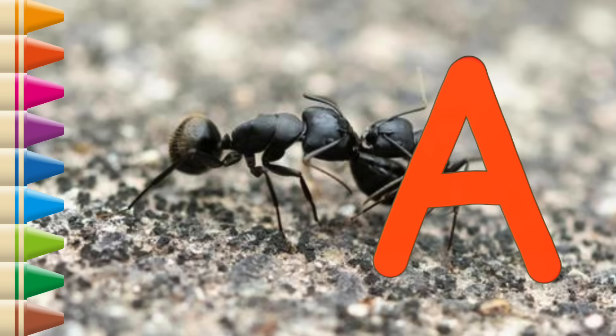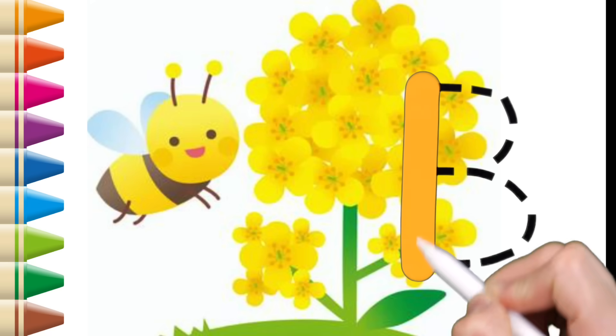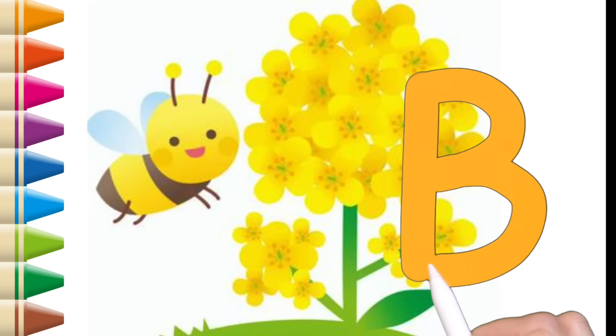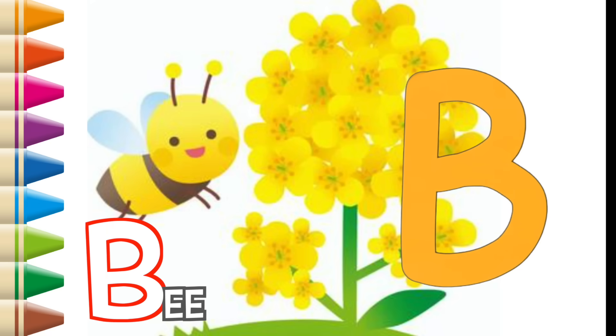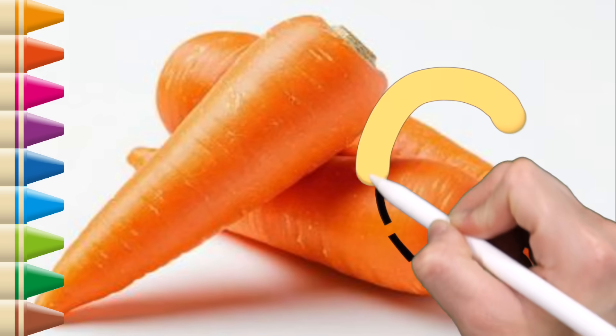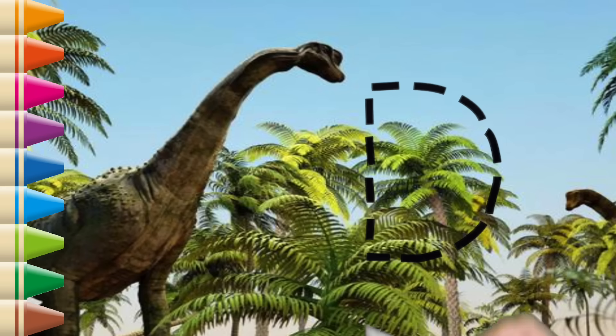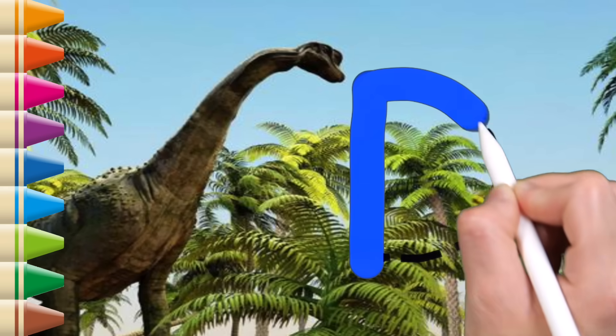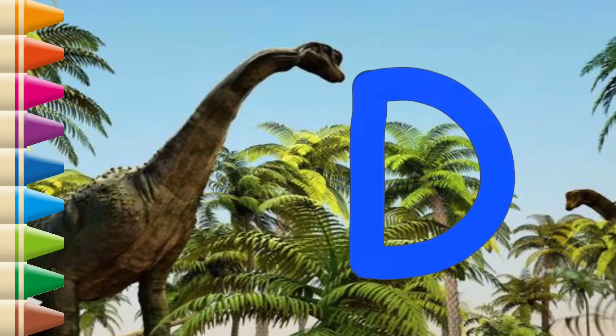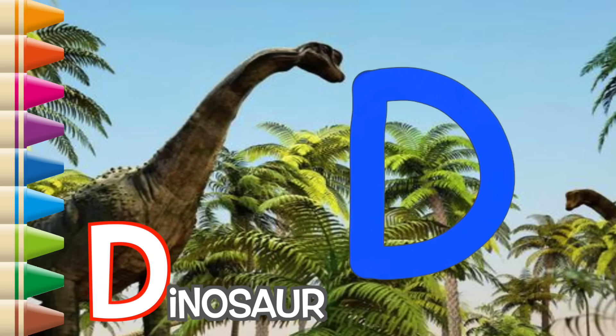A, A, A, A is for... B, A. C, C, C is for Carrot. D, D, D is for Dinosaur.